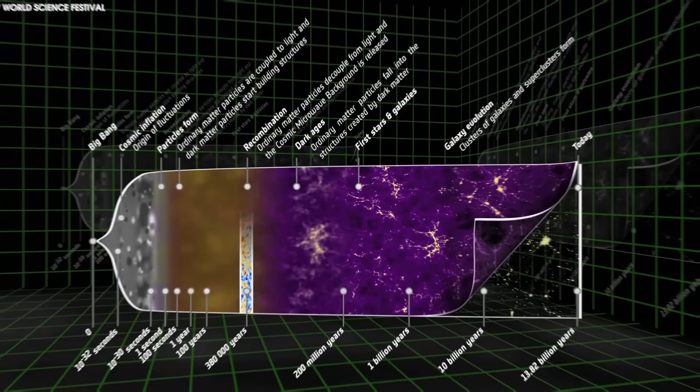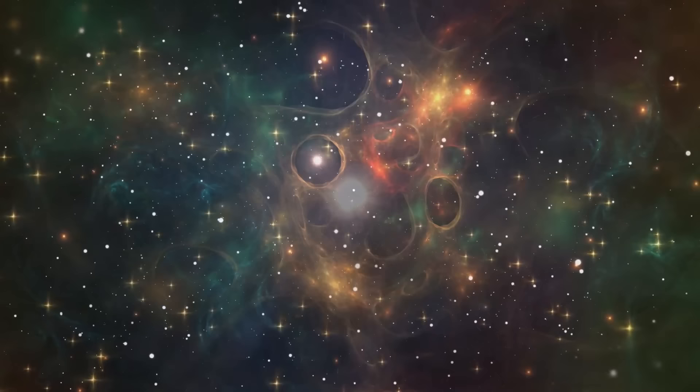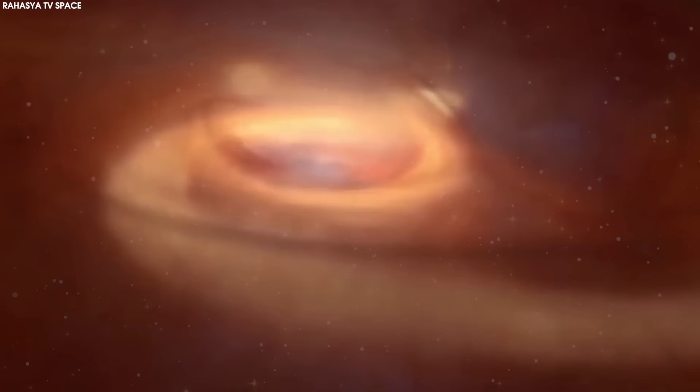According to the standard model, which is the basis for essentially all research in the field, there is a fixed and precise sequence of events that followed the Big Bang. First, the force of gravity pulled together denser regions in the cooling cosmic gas, which grew to become stars and black holes.